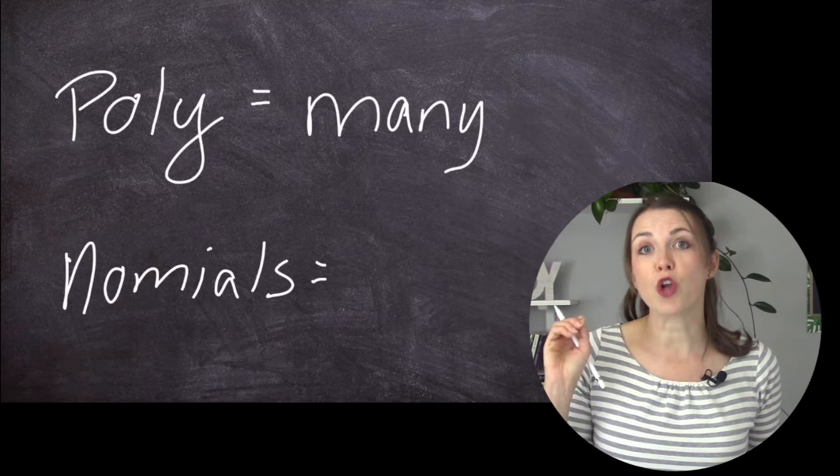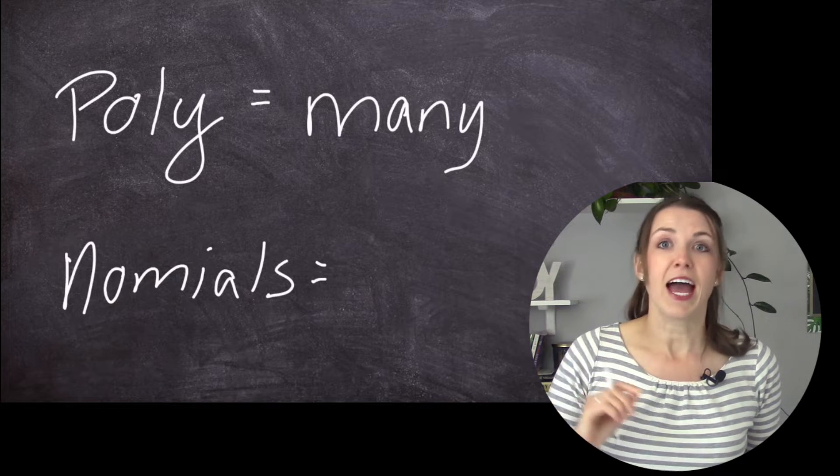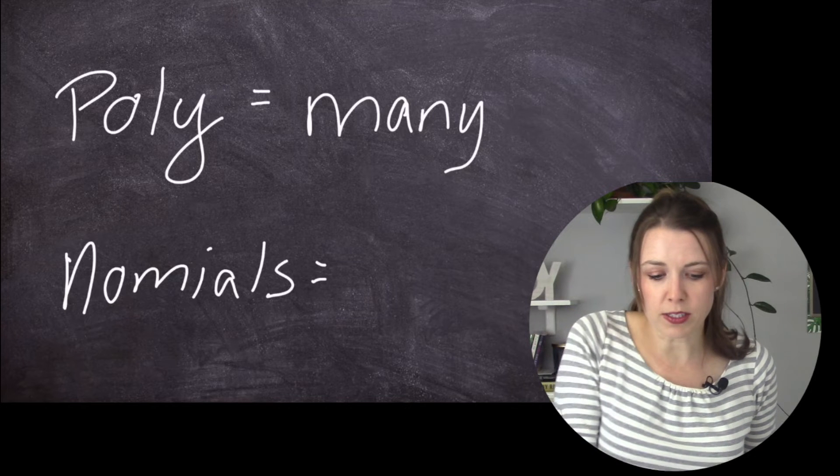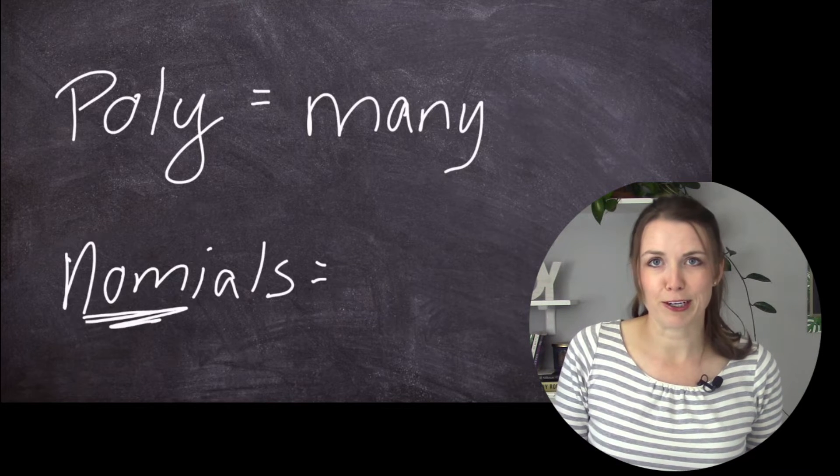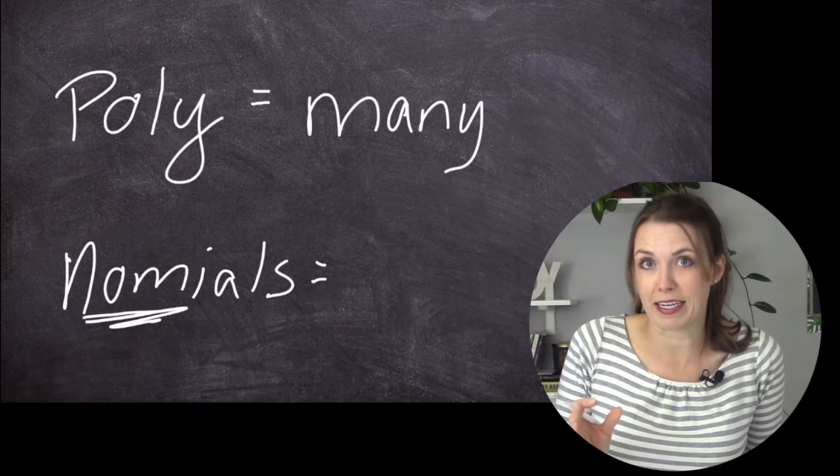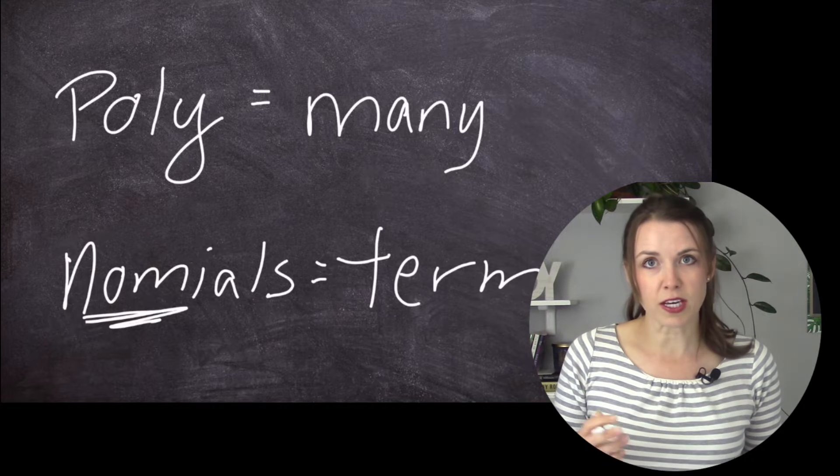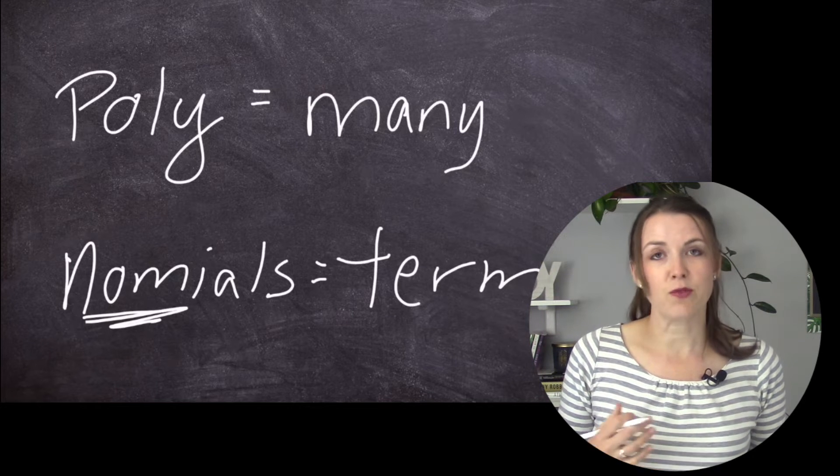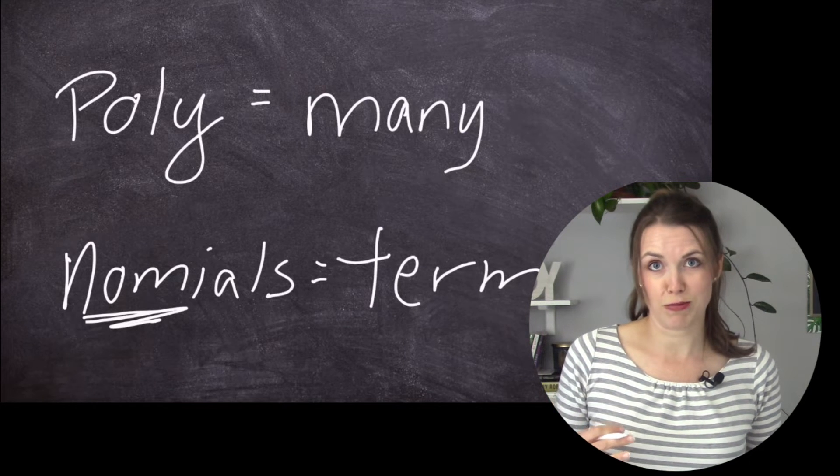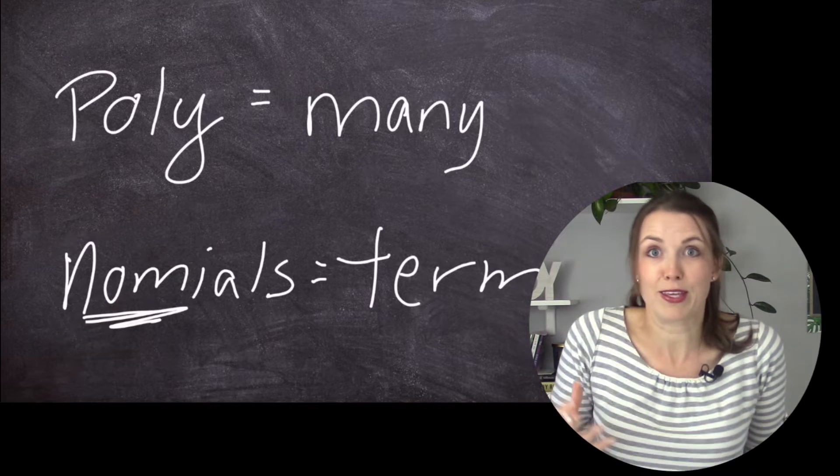Now we have nomials. And so nomials, notice how it kind of looks like number, right? It really does. So many numbers. But it actually in this sense means terms. So when you look at the word polynomial, it really just means many terms. Many meaning more than one.